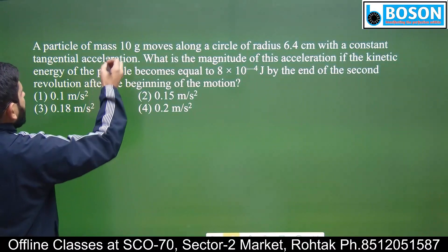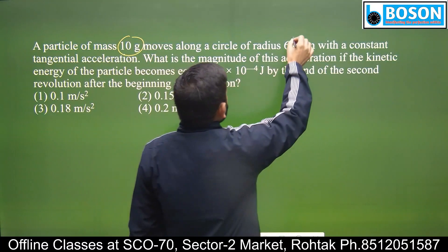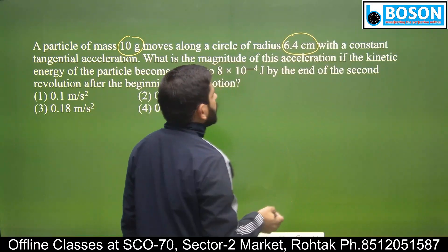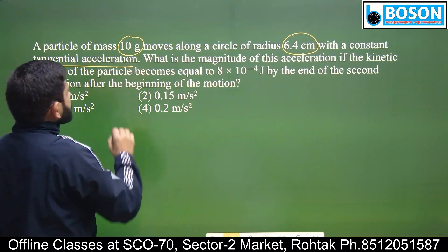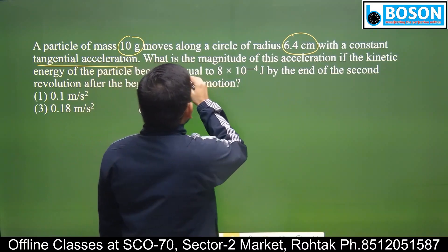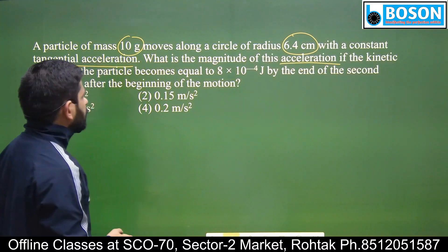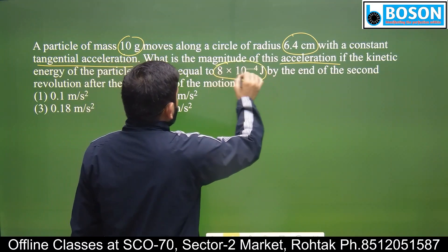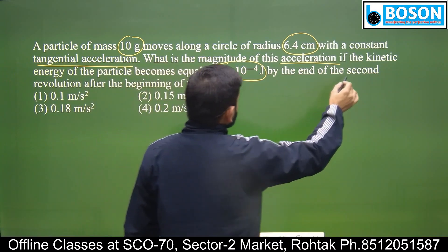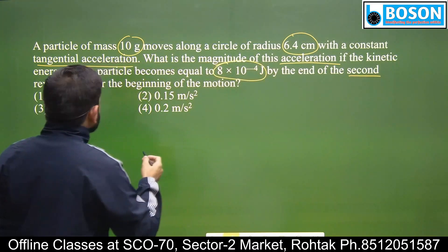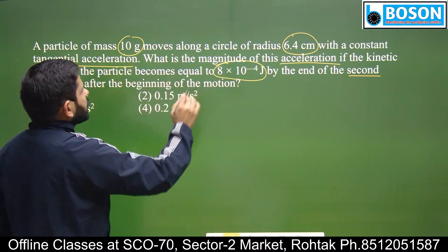In this question, a particle of 10 grams is running in a circle of radius 6.4 cm with a constant tangential acceleration. What is the magnitude of acceleration if the kinetic energy of the particle becomes the given value by the end of the second revolution, after the beginning of the motion?